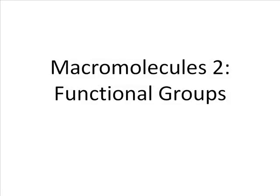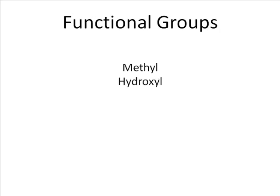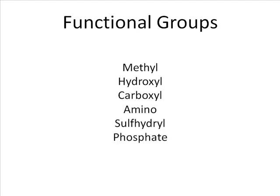In organic macromolecules, functional groups are groups of atoms that convey particular properties when they're present in an organic molecule. There are several functional groups you're responsible for knowing: the methyl group, the hydroxyl group, the carboxyl group, the amino group, the sulfhydryl group, and the phosphate group. We'll take them one by one, and for each one you need to know what it looks like, what its symbol is, and what property is associated with it.